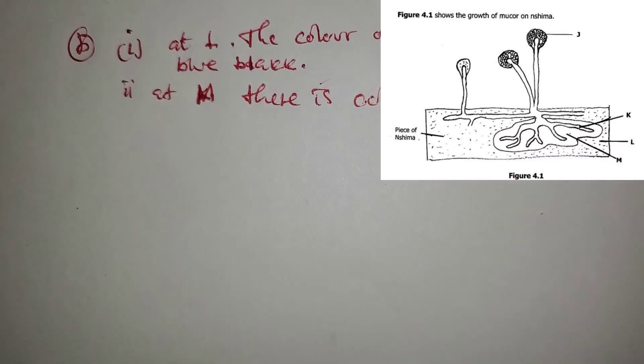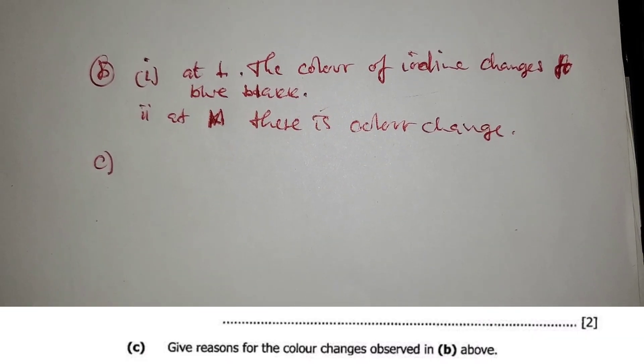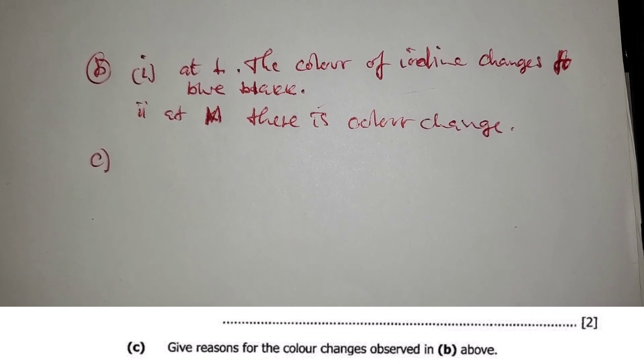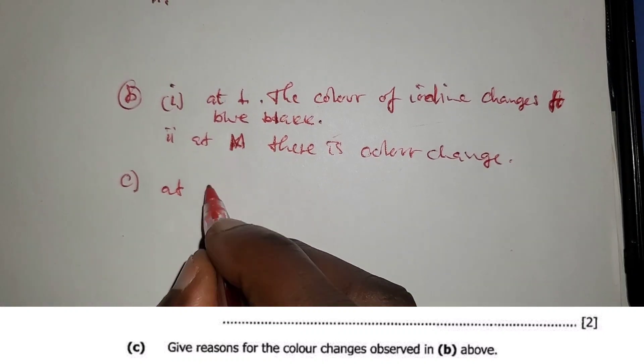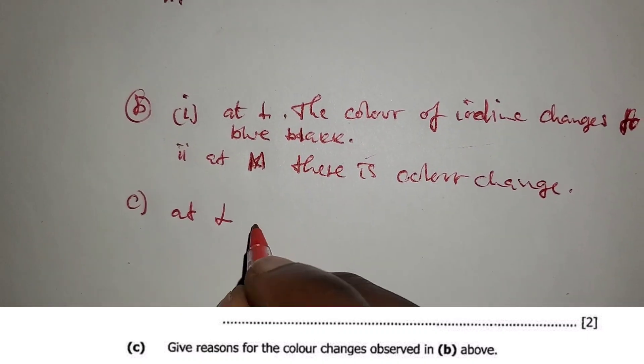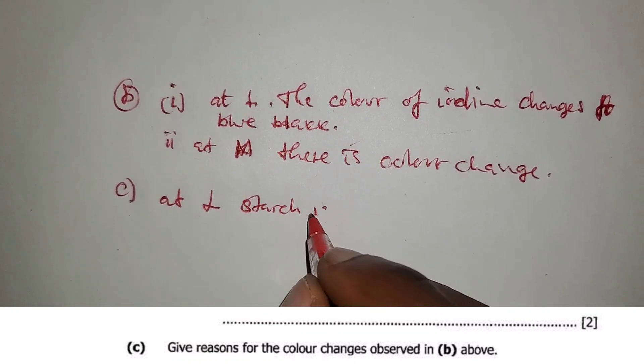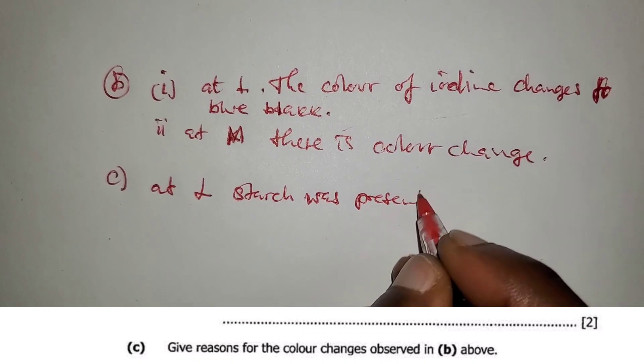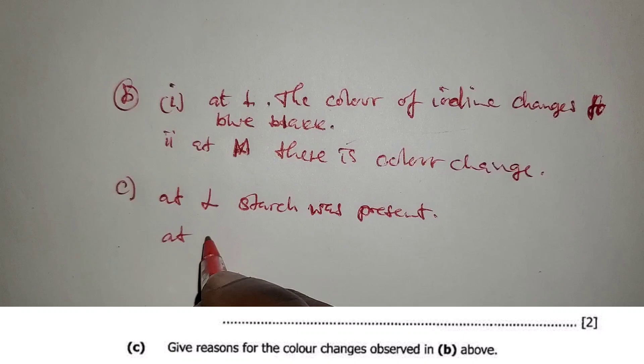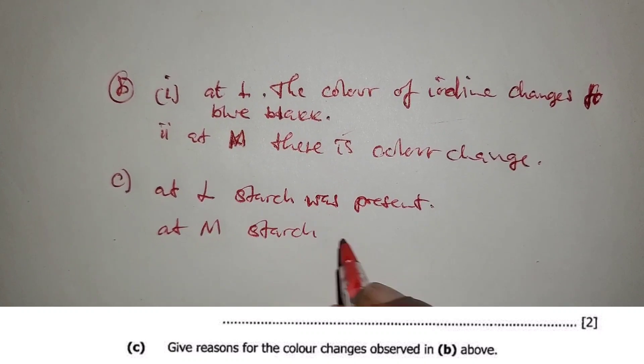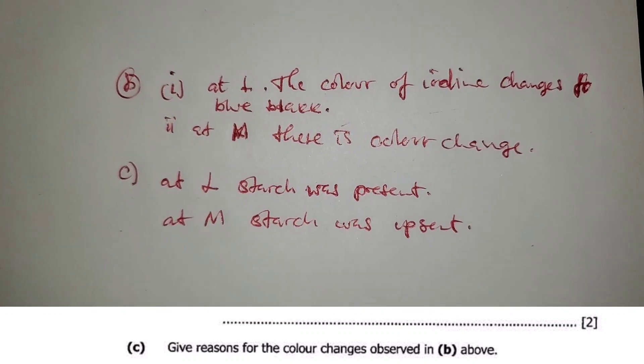Then (c) is saying give reasons for the color change observed in (b) above. So at L, starch was present, and at M, starch was absent.